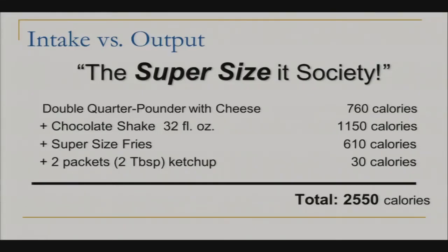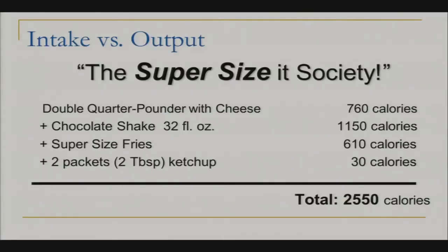This is a great example of intake versus output. We are a supersized society. Take a typical fast food meal: a double quarter pounder with cheese, chocolate shake, supersized fries, and two packets of ketchup — 2,550 calories for that one meal. Think back to your maintenance calories at your current weight. Would you have much left for the day? This is one meal with no other eating. Now think about this at your goal weight — you might have eaten two days' worth of calories.